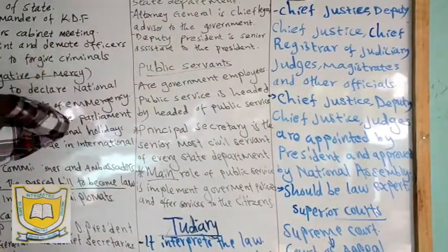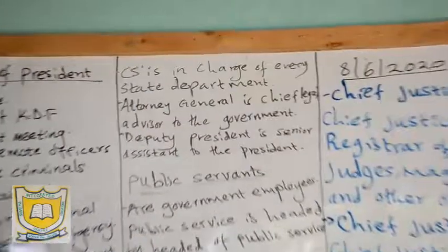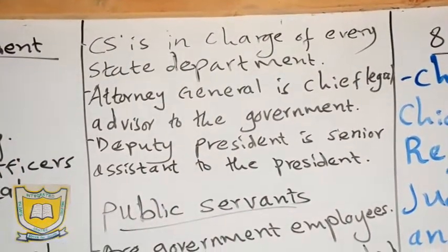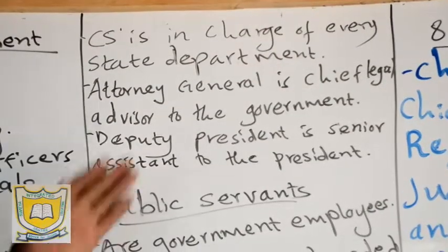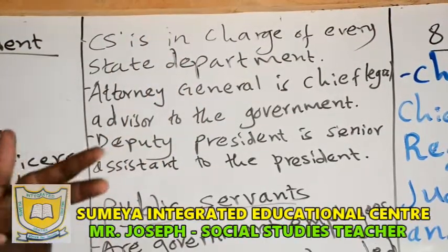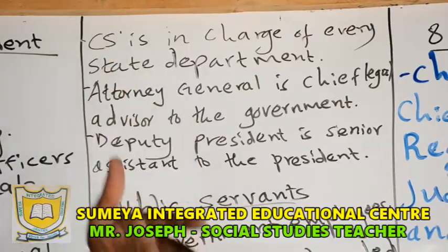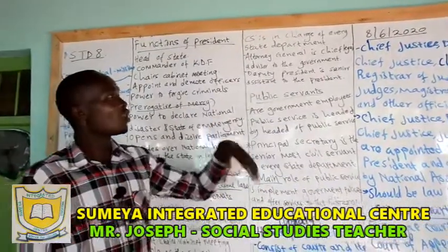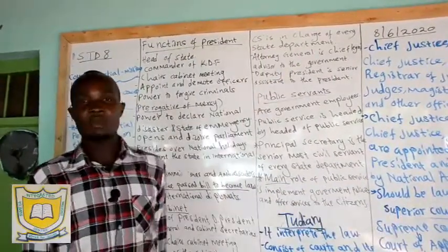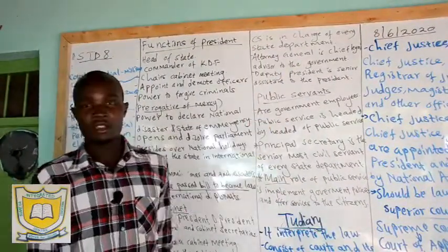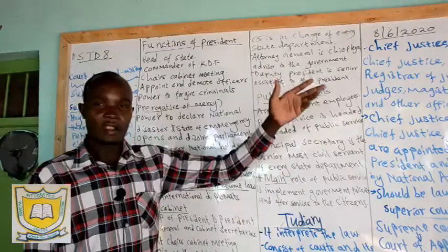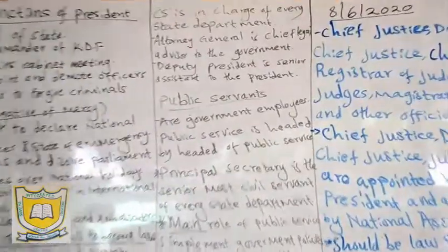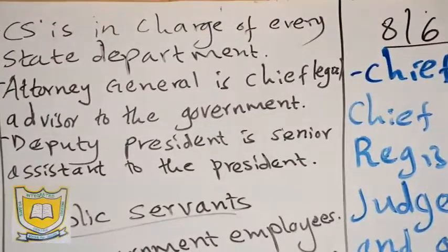The cabinet secretary is in charge of every state department. State departments are what we called ministries in the old constitution, but according to the new constitution we call them state departments. For example, Dr. Fred Matiangi is in charge of security in Kenya, Amina Mohammed handles sports, then Mutahi Kagwe handles health, and the other cabinet secretaries are each in charge of their respective state departments.